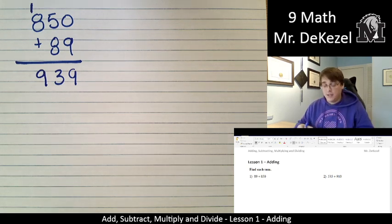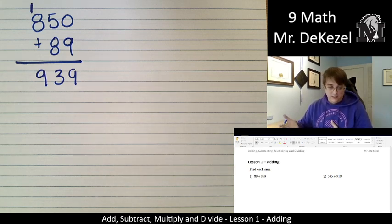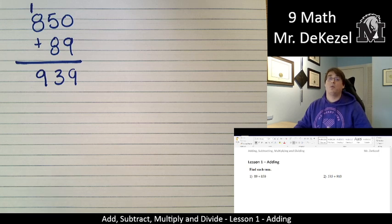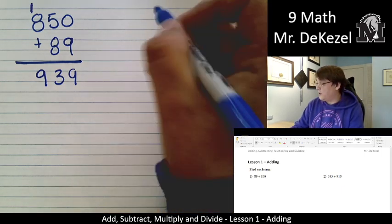If you were to do 850 plus 90, that's like one more than 89. 850 plus 90 is 940, subtract one, that's 939. That's one way you could do that in your head pretty quickly.